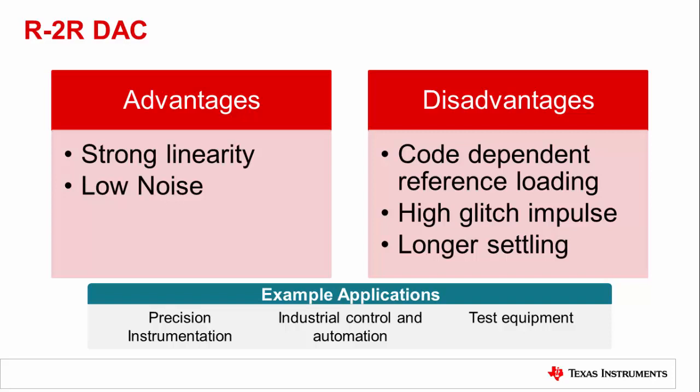One disadvantage of the R2R DAC is the code-dependent loading on the reference. For cases where the DAC will be updated with great frequency, a buffer for the reference input may be necessary to improve reference settling time. The strongest disadvantage of the R2R DAC is the heightened glitch energy created as a result of the higher number of moving switches and break-before-make connection scheme. The switches moving between VREF and ground versus different voltage potentials in the string DAC leads to longer settling time for the R2R DAC. Internal design forces the output buffer to have a wide common mode voltage range, which will tend to make the device more expensive and provide some degradations to linearity.